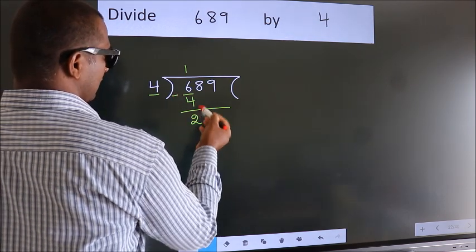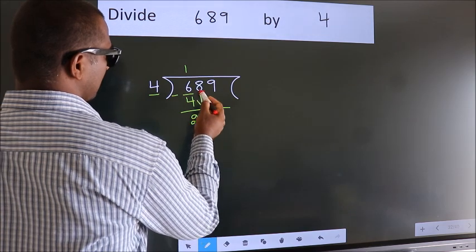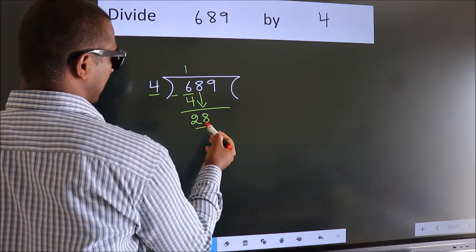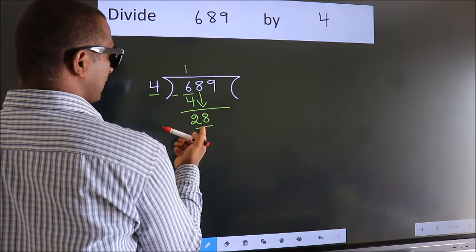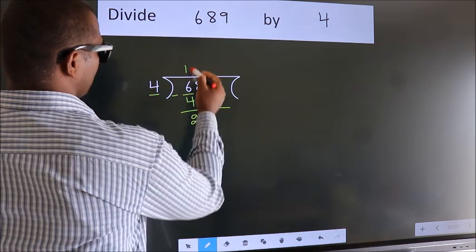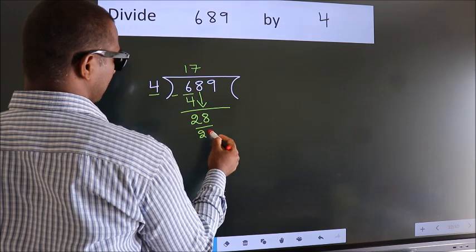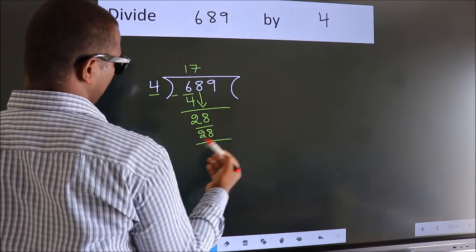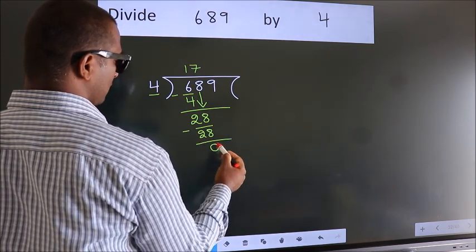After this, bring down the beside number — so 8 down, giving us 28. When do we get 28 in the 4 table? 4 sevens are 28. Now we subtract. We get 0.